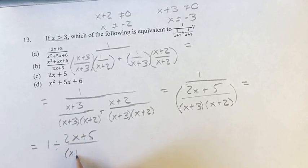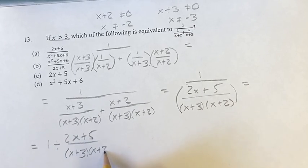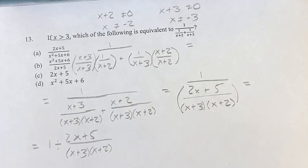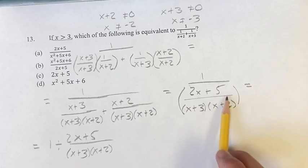This is the same thing, just writing it in a little bit different form, just to understand it a little bit better. We have 1 divided by all of this. That's the same as 1 divided by all of this.